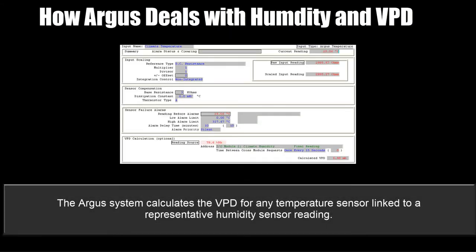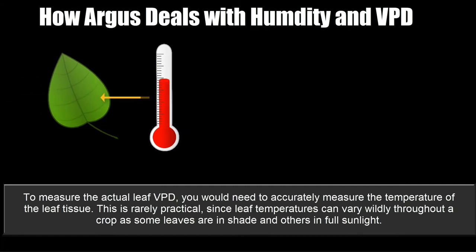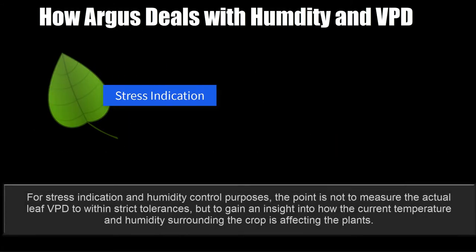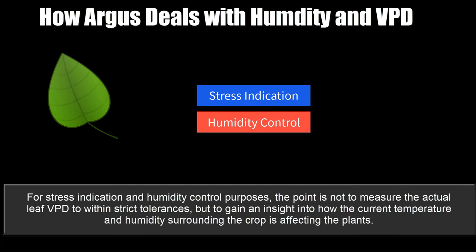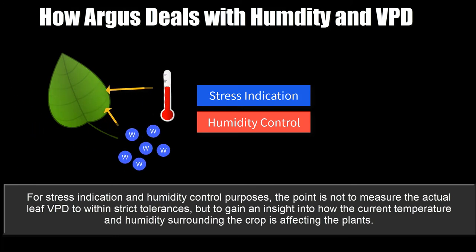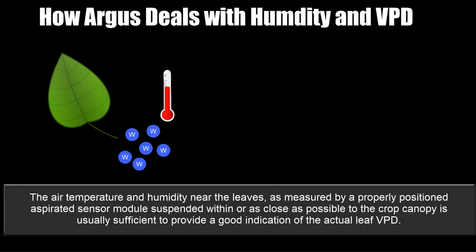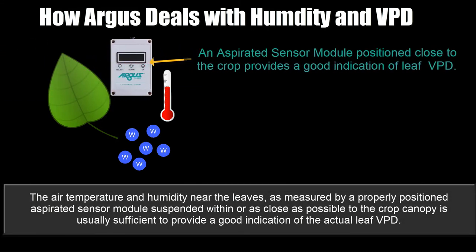How does Argus deal with humidity and VPD? The Argus system calculates the VPD for any temperature sensor linked to a representative humidity sensor reading. To measure the actual leaf VPD you would need to accurately measure the temperature of the leaf tissue, which is rarely practical since leaf temperature can vary wildly throughout a crop as some leaves are in shade and others are in full sunlight. For stress indication and humidity control purposes, the point is not to measure the actual leaf VPD to within strict tolerances, but to gain an insight into how the current temperature and humidity surrounding the crop is affecting the plants. The air temperature and humidity near the leaves, as measured by a properly positioned aspirated sensor module suspended within or as close as possible to the crop canopy, is usually sufficient to provide a good indication of the actual leaf VPD.